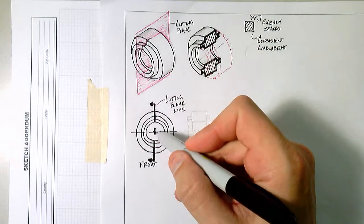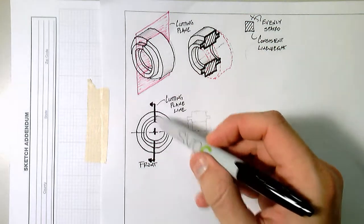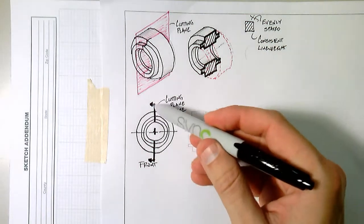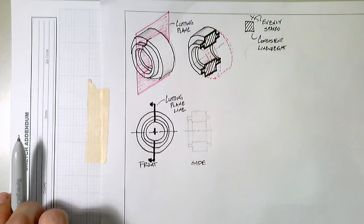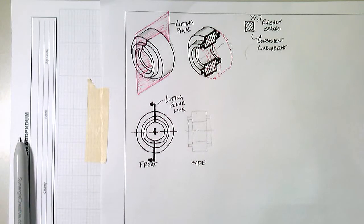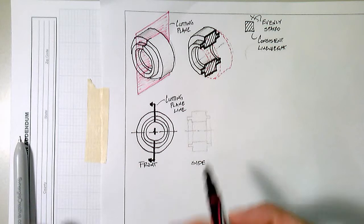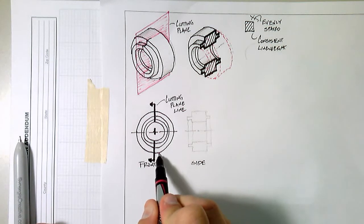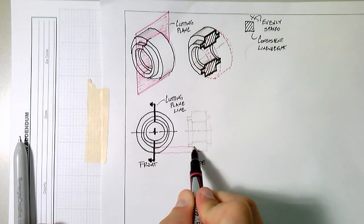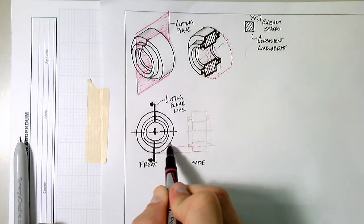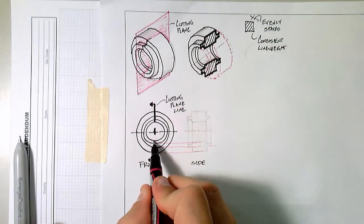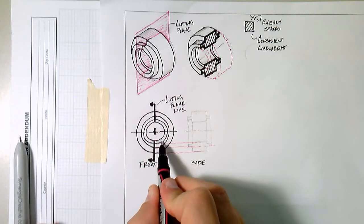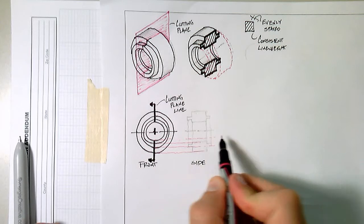Once you have your cutting plane line, you have your view, which way you're looking, you need to start projecting lines over from one view to the other. So in this case, I'm going to take my pen here and project over just like you'd create a side view, our projection lines that are projecting the edge of the object. All of these are the different ridges on the form.